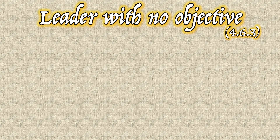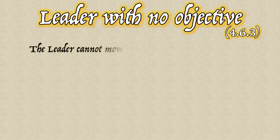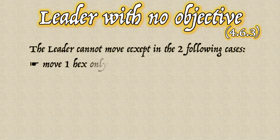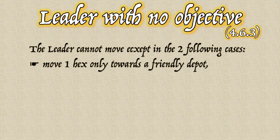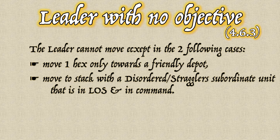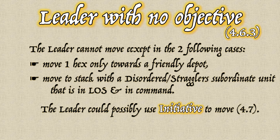If a formation leader has no implemented objective marker on the map — remember that an unimplemented OM doesn't count — then the leader is restricted in his movements. He cannot move except in two cases: he can move one hex but only towards a friendly depot hex, basically towards the rear; or he can move to stack with a disordered unit or a unit with stragglers that is subordinate to him, in his line of sight and in command, possibly to help the unit reform. The leader could also use initiative to move and assign himself a temporary order — refer to rules 4.7 for initiative.